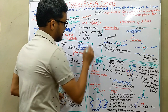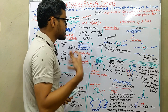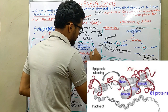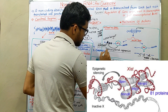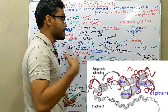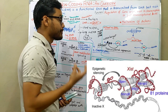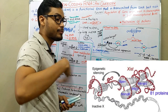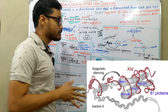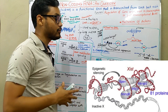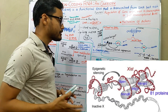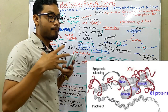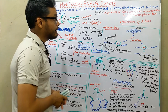XIST stands for X inactivation specific transcript. XIST is produced by an X chromosome in females. Females have two X chromosomes. The chromosome that produces XIST becomes inactivated — XIST wraps around the chromosome itself, blocking the activity of that X chromosome. Thereby only one X chromosome remains active and functional, while the other — where XIST is activated — has its function blocked. This is how XIST creates dosage compensation in humans.